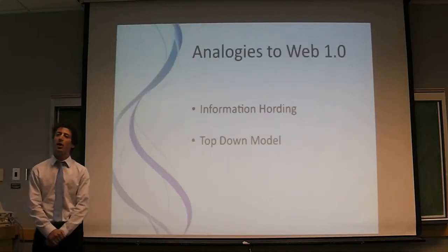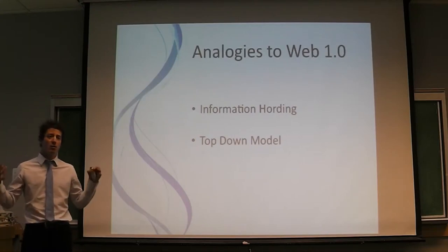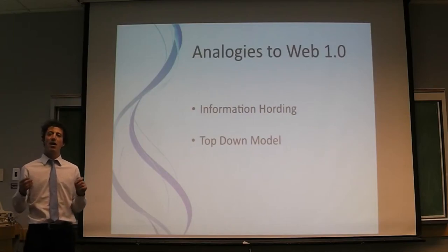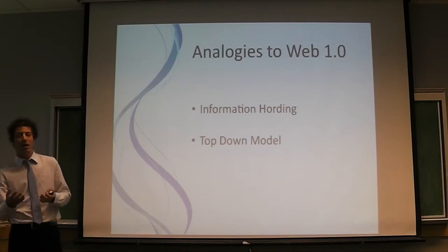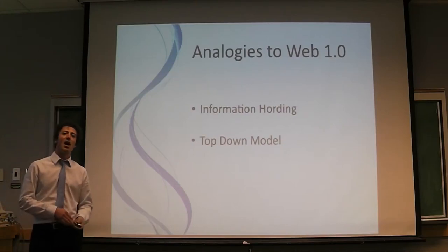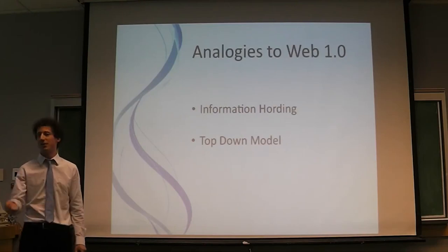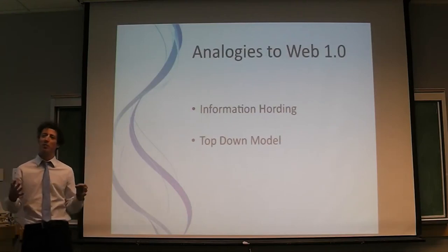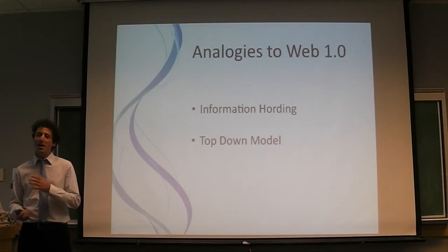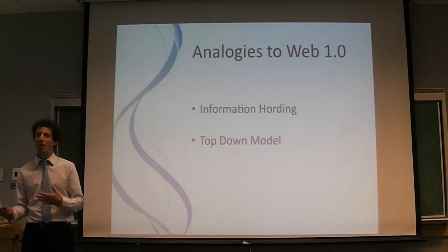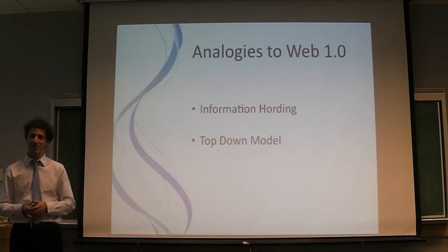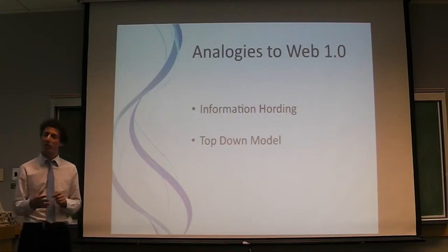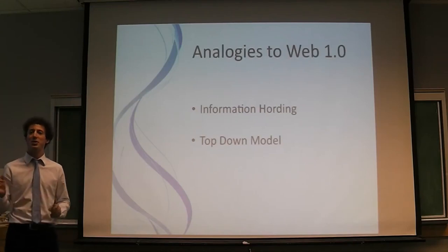Some analogies between Web 1.0 and commercial albacore tuna fishing are information hoarding. In Web 1.0 there is a strong emphasis on copyrighting, and with Microsoft for example there is the releasing of software that you have to keep buying. In commercial fishing, there is also information hoarding — a fisherman may not want to share where they caught fish, because then others will come and catch their fish. There is a need for information sharing, but also a hoarding of information, with sharing limited to particular individuals.